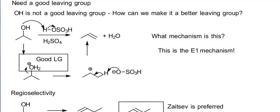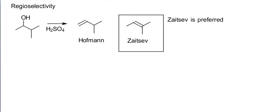The E1 mechanism tends to prefer formation of the most stable possible product. So Zaitsev is preferred in almost all cases.